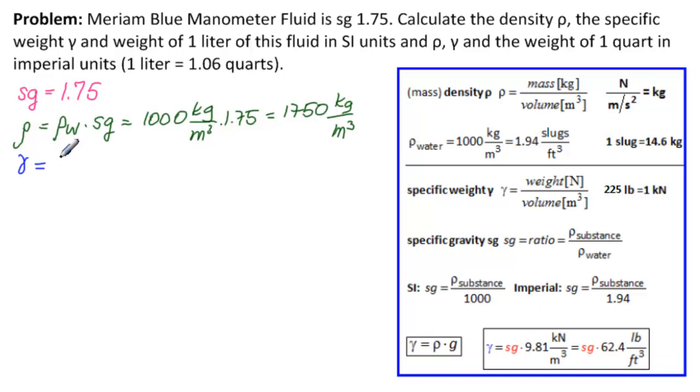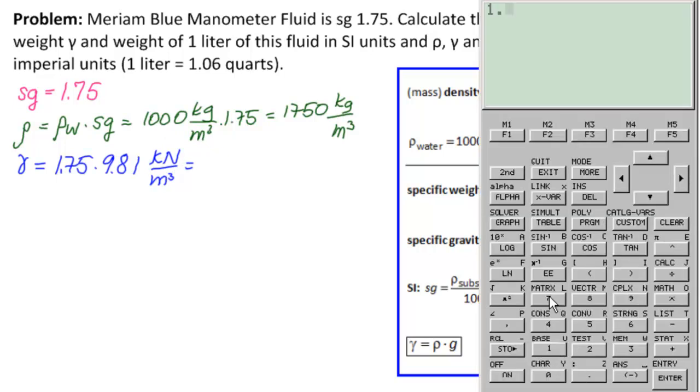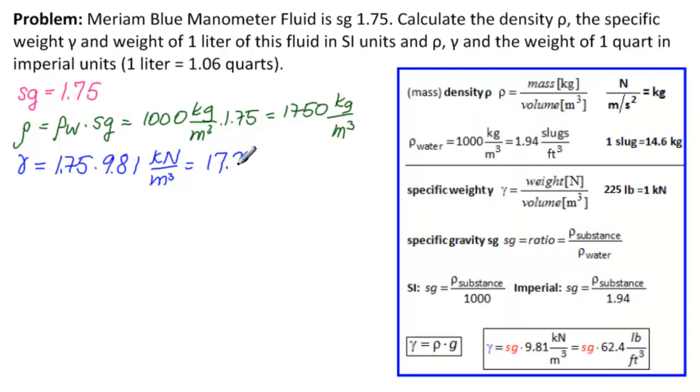So anyway, SG, 1.75 times 9.81 kilonewtons per meter cubed, that's the correct unit. Get our calculator. So 1.75 times 9.81. We expect it to be a little bit less than 17 because this is a little smaller than 10. 17.2. So 17.2 kilonewtons per meter cubed.